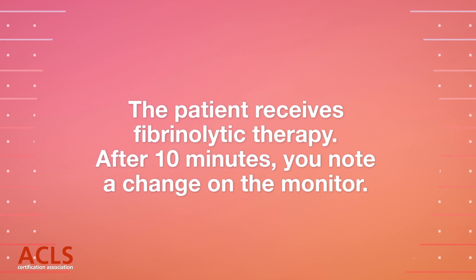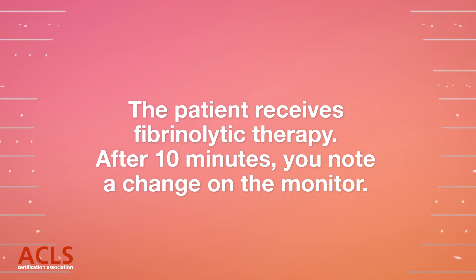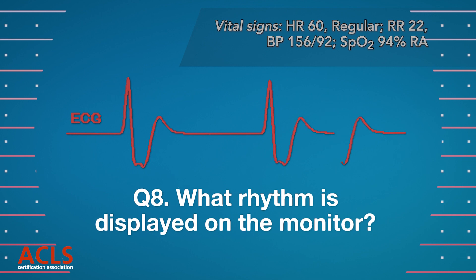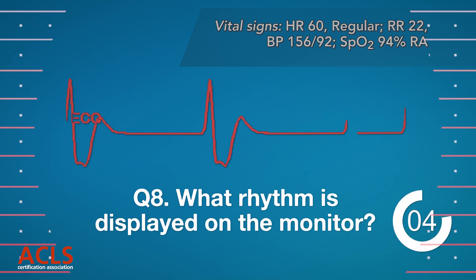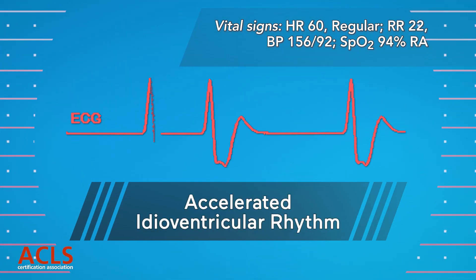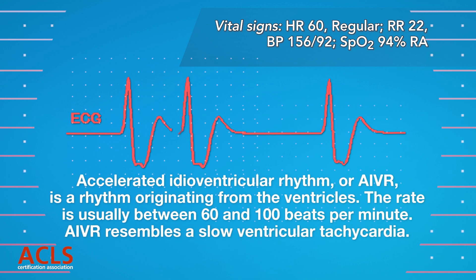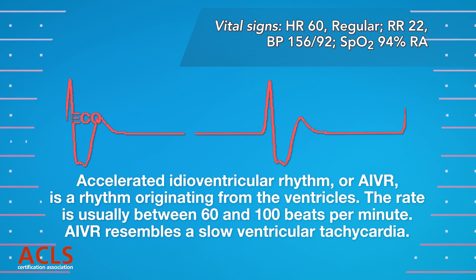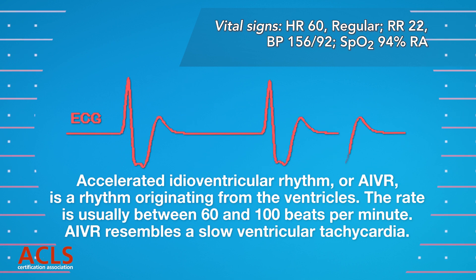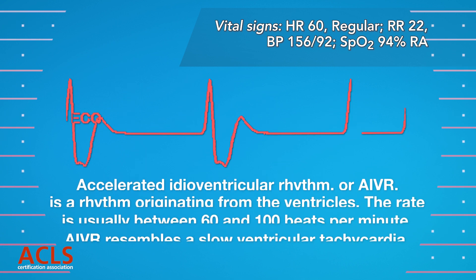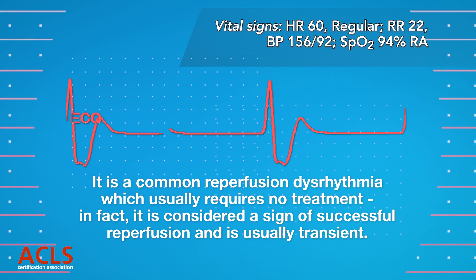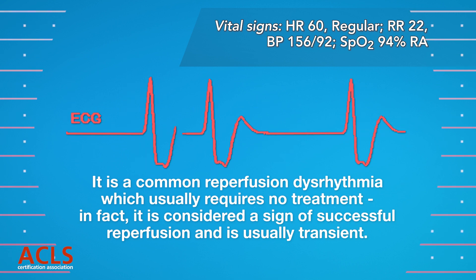The patient receives fibrinolytic therapy. After 10 minutes, you note a change on the monitor. What rhythm is displayed on the monitor? Accelerated idioventricular rhythm. Accelerated idioventricular rhythm, or AIVR, is a rhythm originating from the ventricles. The rate is usually between 60 and 100 beats per minute. AIVR resembles a slow ventricular tachycardia. It is a common reperfusion dysrhythmia which usually requires no treatment. In fact, it is considered a sign of successful reperfusion and is usually transient.